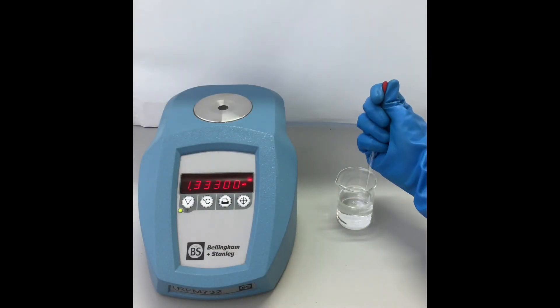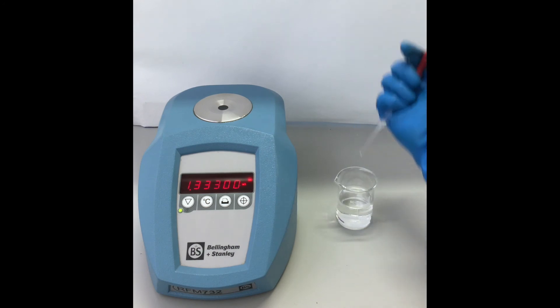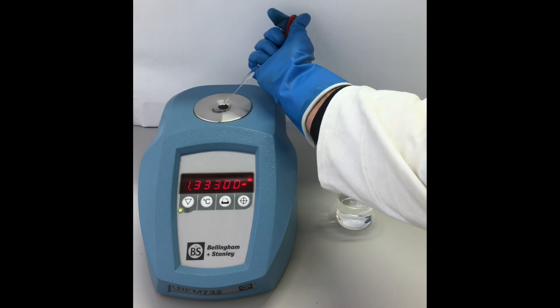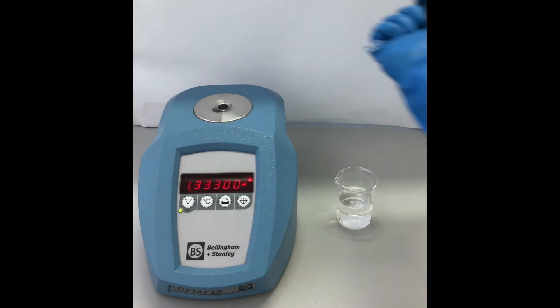To perform a sample measurement, apply your liquid phase sample directly onto the measuring prism and then press the read key. Make sure to take note of the reading displayed.